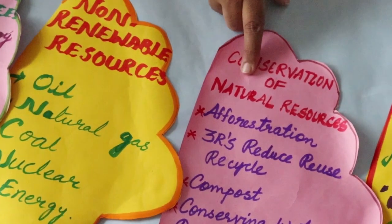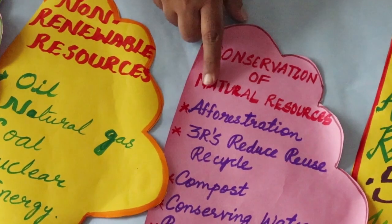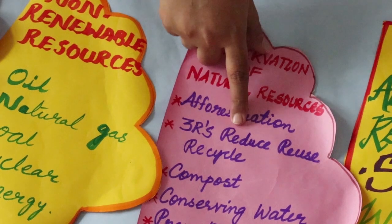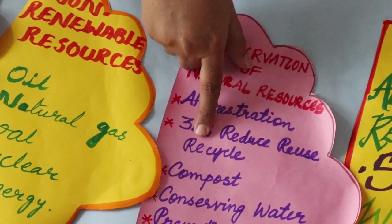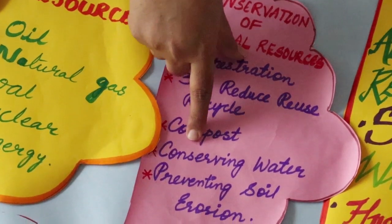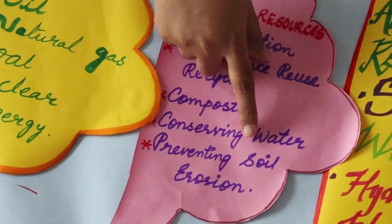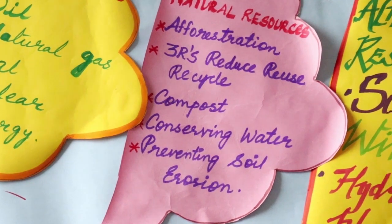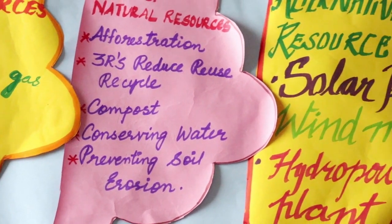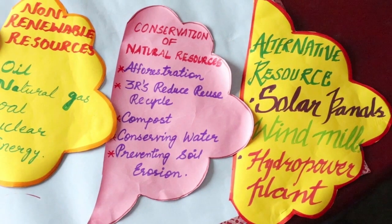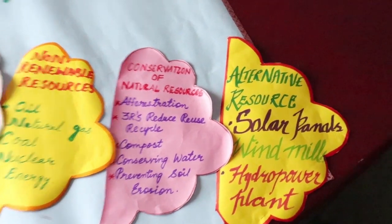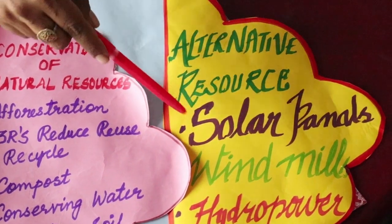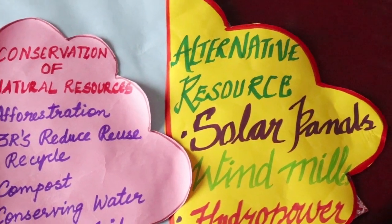Conservation of natural resources includes afforestation, the 3Rs — reduce, reuse, recycle — conserving water and preventing soil erosion. Along with conservation methods, we can also use resources alternatively. These are called alternative resources like solar panels, windmills and hydropower plants.